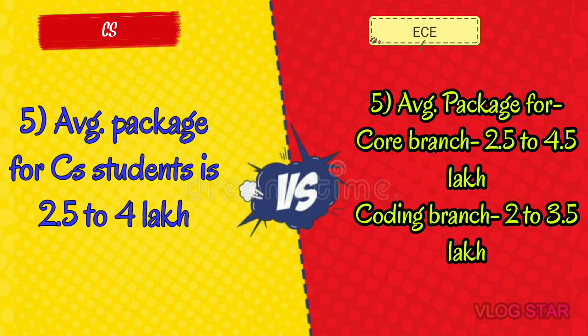The average salary package of CS students varies from 2.5 to 4 lakh, whereas in EC branch the average package for core branch is 2.5 to 4.5 lakh and for coding it is 2 to 3.5 lakh for freshers.